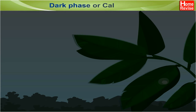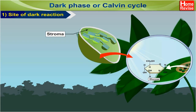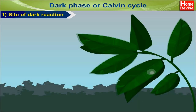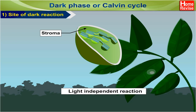Dark Phase or Calvin Cycle. This is the biosynthetic phase of photosynthesis. The dark reaction occurs in the stroma of chloroplasts. It is also called the light-independent reaction.